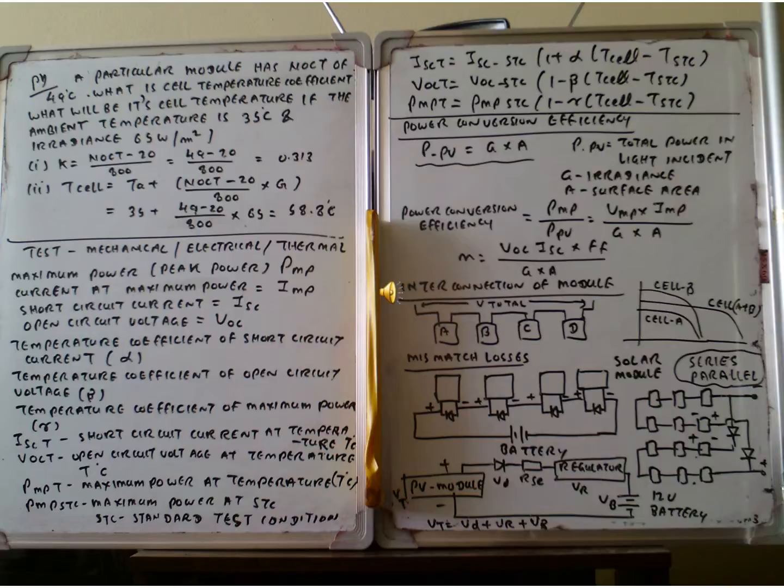The next one is the power conversion efficiency. PPV is the total power in the light incident. So when the lights fall on the solar cell, the electric power will be produced. The PPV is the total power in the light incident. G is the irradiance and A is the surface area. So PPV is equal to G multiply A.